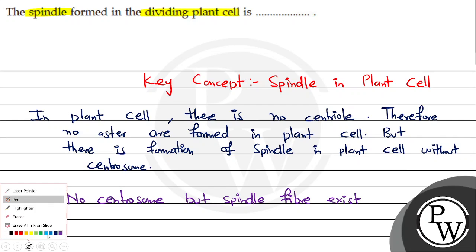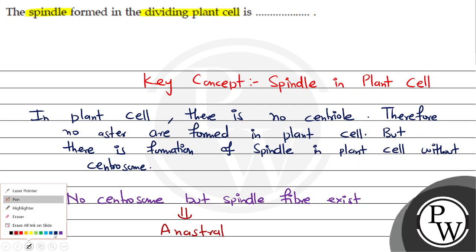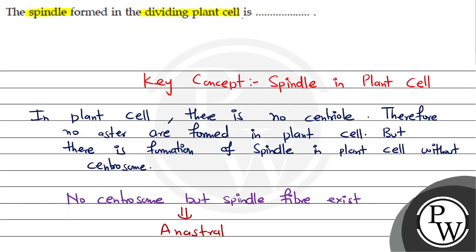This condition is called anacetrol — yani, without aster. The spindle formed in the dividing plant cell is anacetrol. Hope you understood well.